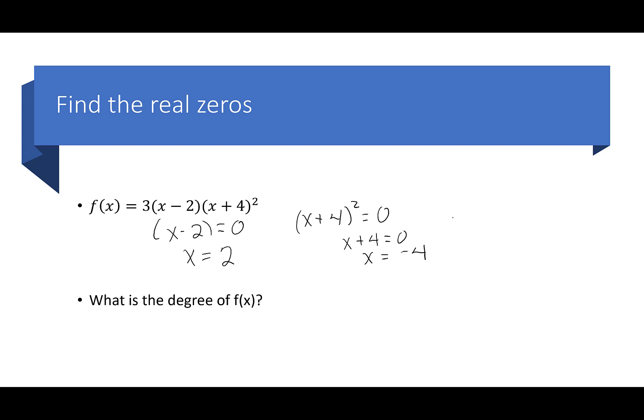The degree comes from adding up all of the exponents of each factor. If we were to expand this polynomial, the (x + 4)² gives an x², and multiplying by (x − 2) gives x³. So without expanding, we just add the exponents, and our degree is 3. Remember, degree is just the highest power of any particular term in the polynomial.